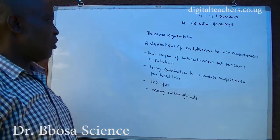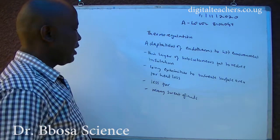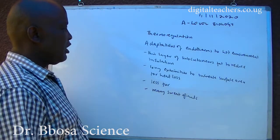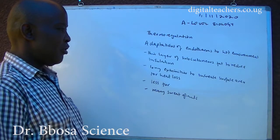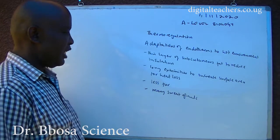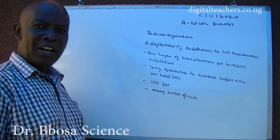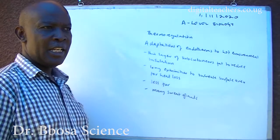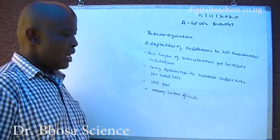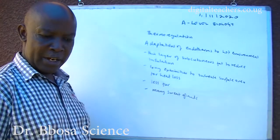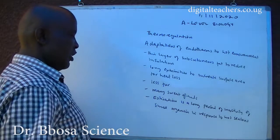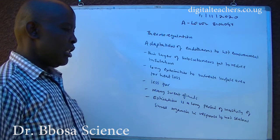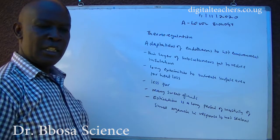Adaptations of endotherms to hot environments: thin layers of subcutaneous fat to reduce insulation; long extremities to increase surface area for heat loss; fewer hairs to reduce insulation; more merocrine sweat glands to increase sweating — evaporation of sweat leads to cooling of the animal. Aestivation is a longer period of inactivity of small organisms in response to hot seasons.